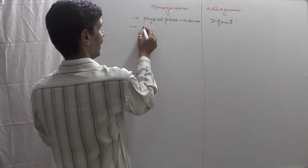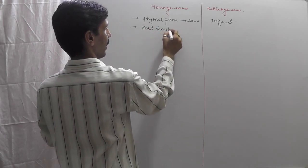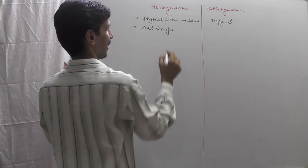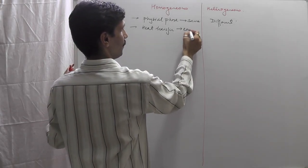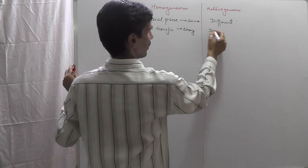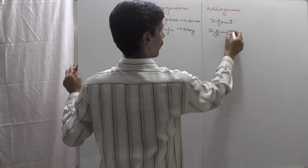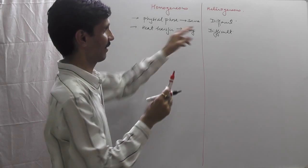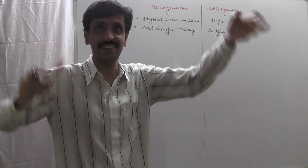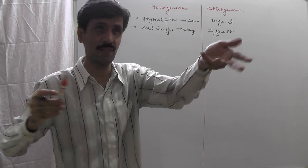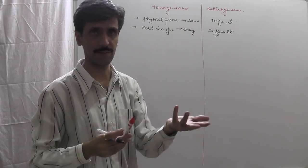The second point is heat transfer during the course of the process. In homogeneous catalysis, heat transfer is quite easier. However, in heterogeneous catalysis it is comparatively difficult. Please note — I am using comparative terms here; it doesn't mean it's impossible, just that it is more difficult compared to homogeneous catalysis.